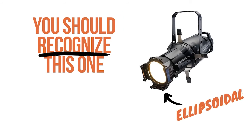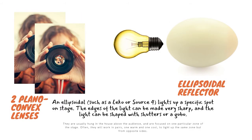You should recognize this one from the previous lesson: the ERS, the ellipsoidal reflecting spotlight, or ellipsoidal for short. An ellipsoidal has a lamp and an ellipsoidal reflector at the back, which focuses the light on a focal point right by the shutters, which then sends the light up into two plano-convex lenses at the front — a bit like two magnifying glasses facing each other front to front. An ellipsoidal, such as a Leko or a Source 4, lights up a specific spot on the stage. The edges of the light can be made very sharp, and the light can be shaped with shutters or a gobo. They're usually hung in the house above the audience and are focused on one particular zone of the stage. Often they will work in pairs, one warm and one cool, to light up the same zone but from opposite sides.